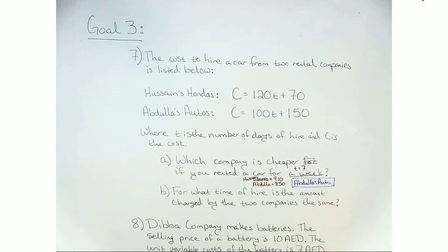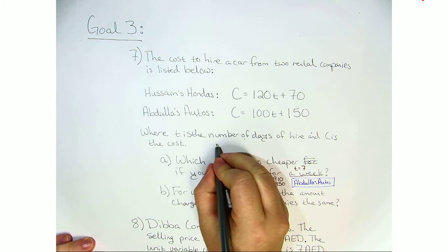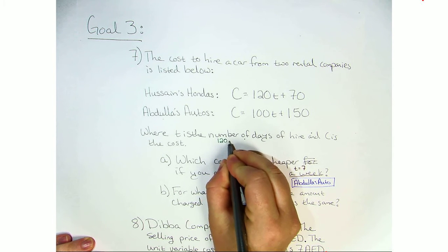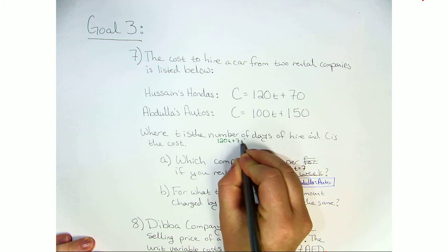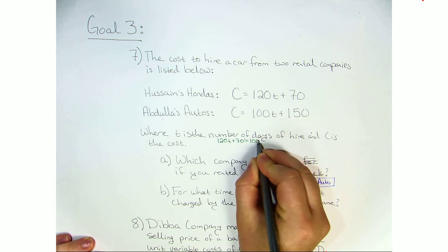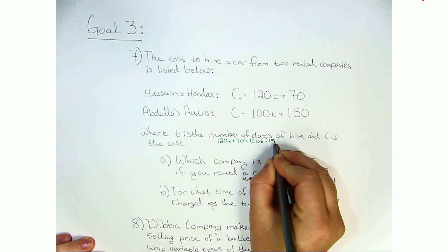For what time of hire is the amount charged by the two companies the same? So now what we need to do is we need to set these two equations equal to each other. So 120T plus 70 equals 100T plus 150.